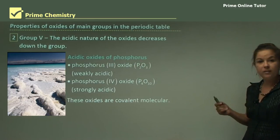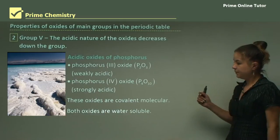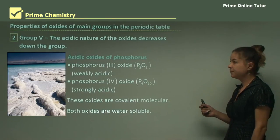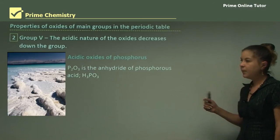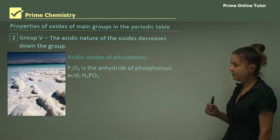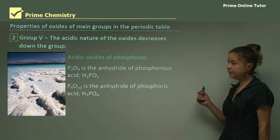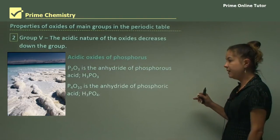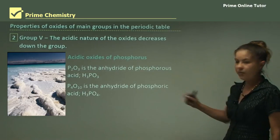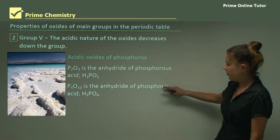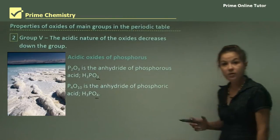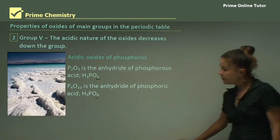These oxides are covalent molecular and both are water soluble. P4O6 is the anhydride of phosphorous acid H3PO3, and P4O10 is the anhydride of phosphoric acid H3PO4. These are two different molecules that differ by the number of oxygen atoms.